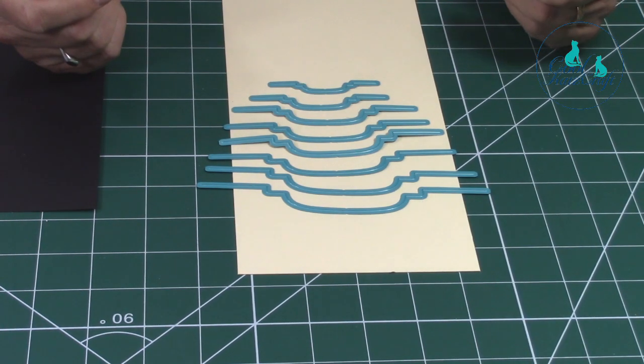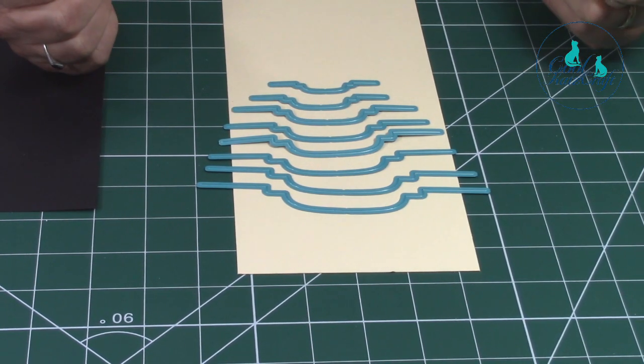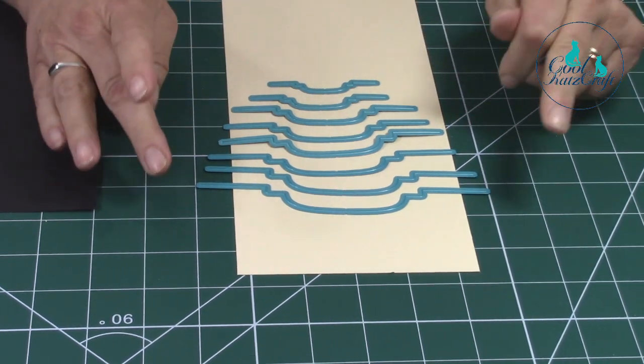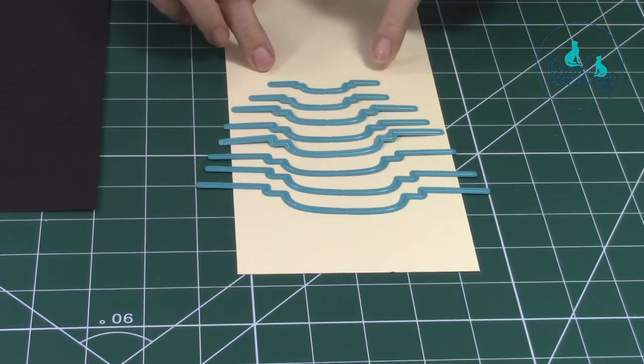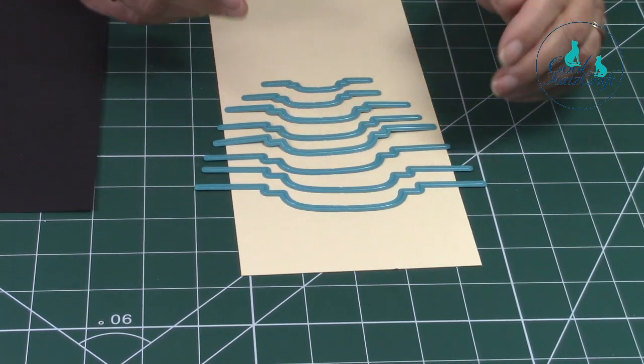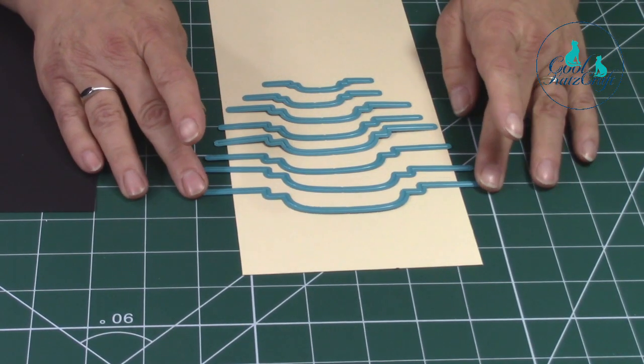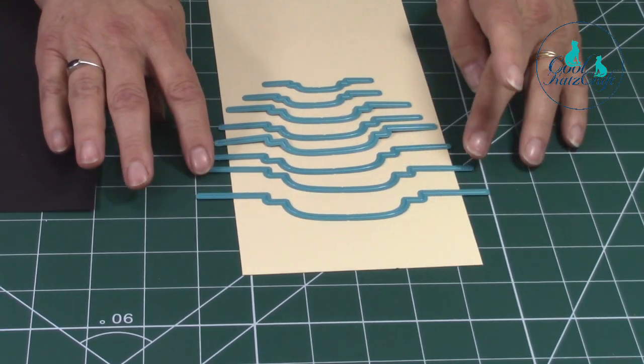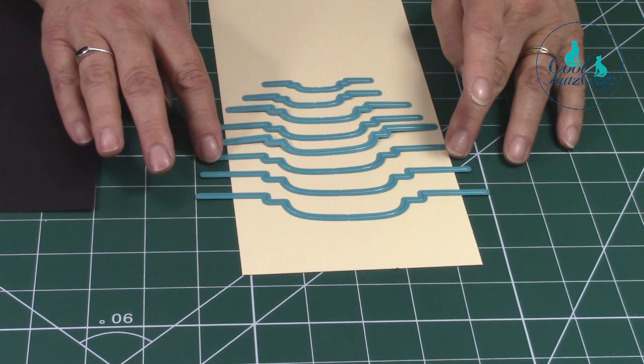Hi, it's Kay here, and this is our walrus whiskers die set. There are eight in the set going from six inches all the way down to tiny. They graduate down and make fantastic tab tops. I'm going to make a quick pocket that you can put into an album using one of the dies.